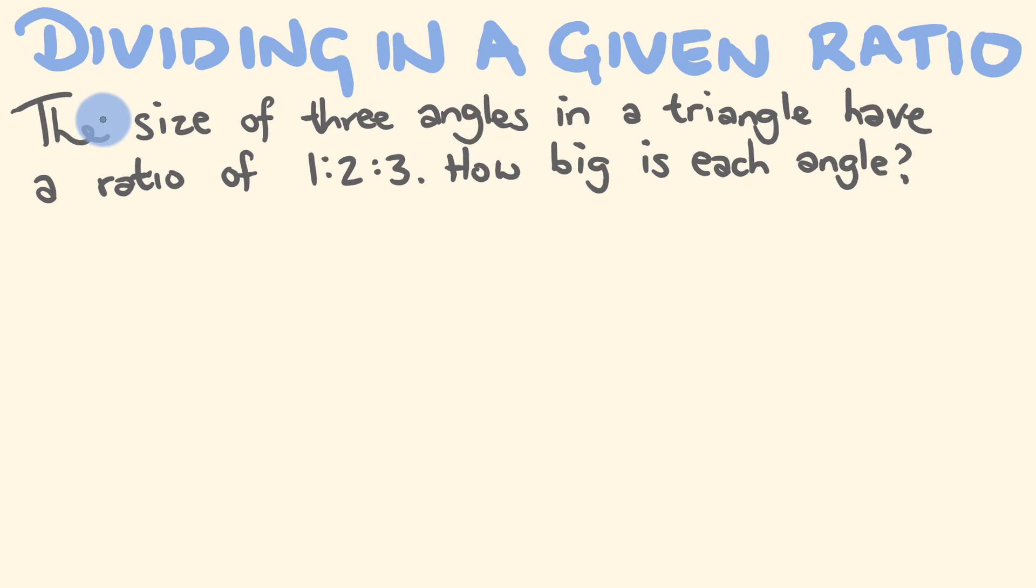So for our final example, we have this question here. The size of three angles in a triangle have a ratio of 1:2:3. How big is each angle? So the first thing you need to know is how many degrees in a triangle, which is 180 degrees. So how are we going to solve this now? Well, pretty simple. How many parts in total are we sharing out? And as you can see, we have 1 plus 2 plus 3. We have 6 parts.